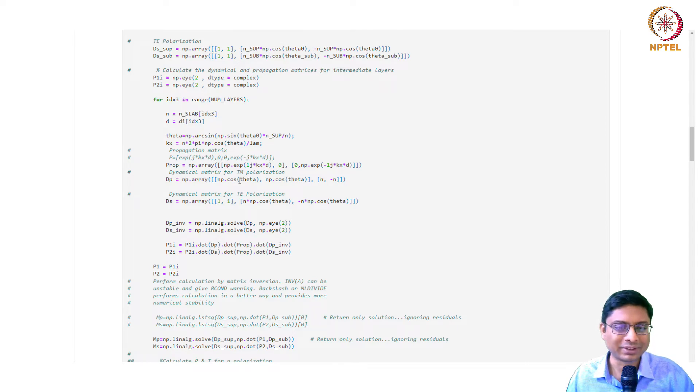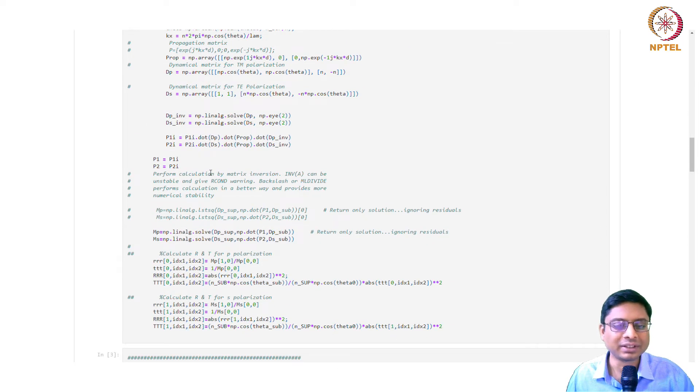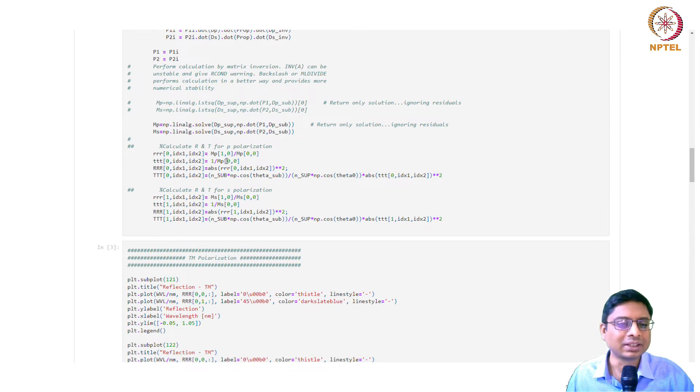For TM polarization, I wrote it as cos theta and one and minus one in the lecture notes, but it should be n and minus n. For TE polarization, it's one and one, n cos theta minus n cos theta. Once you have the matrix, it's simply a matter of matrix multiplication. The specific details of how it is implemented are given here.